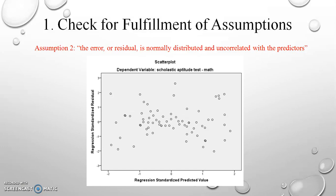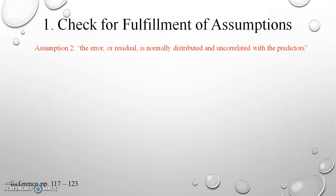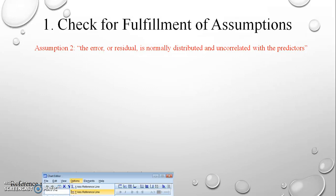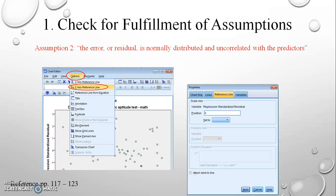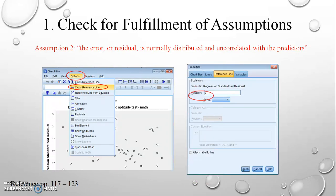To better interpret the residual plot, we can add a reference line at zero. We go back to the output, double-click on the scatter plot, and the chart editor appears. We click Options, then Y Axis Reference Line. The properties dialog box appears and we type 0 in the position field, then select Apply and close out from the box.